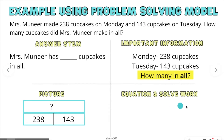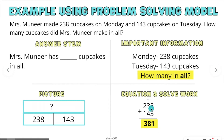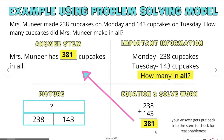Let's go ahead and write the equation and solve our work. We have 238 plus 143. 8 plus 3 is 11 — put the 1 here and carry the other 1. 1 plus 3 is 4, plus 4 is 8. 2 plus 1 is 3. So our answer is 381. Now we're going to put our answer back into our answer stem: Mrs. Muneer has 381 cupcakes in all.